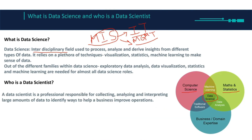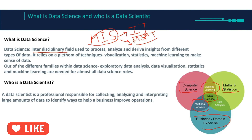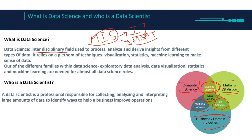Data science is not just one or two fields — it's more than four or five completely different fields. We have computer science, math and statistics, business domain expertise, traditional software, machine learning, and data analysis. If you combine all of them you get data science. If you combine only math with computer science you get machine learning. If you combine business expertise with math and statistics you get data analyst. That's the gist of this Venn diagram.